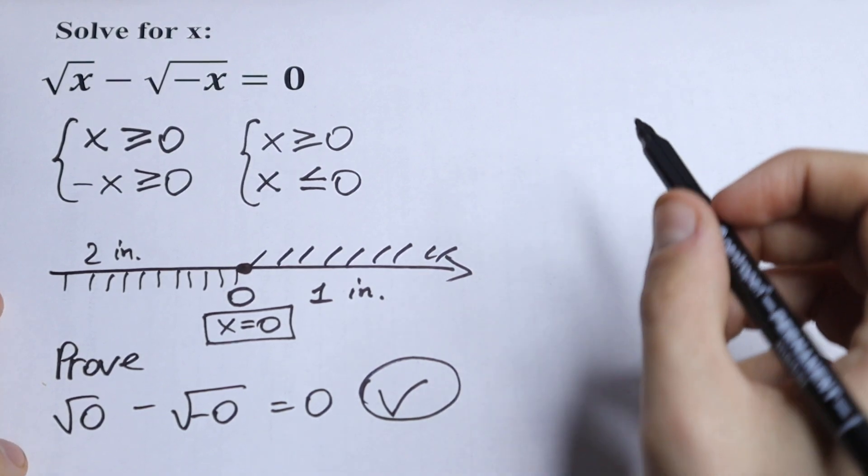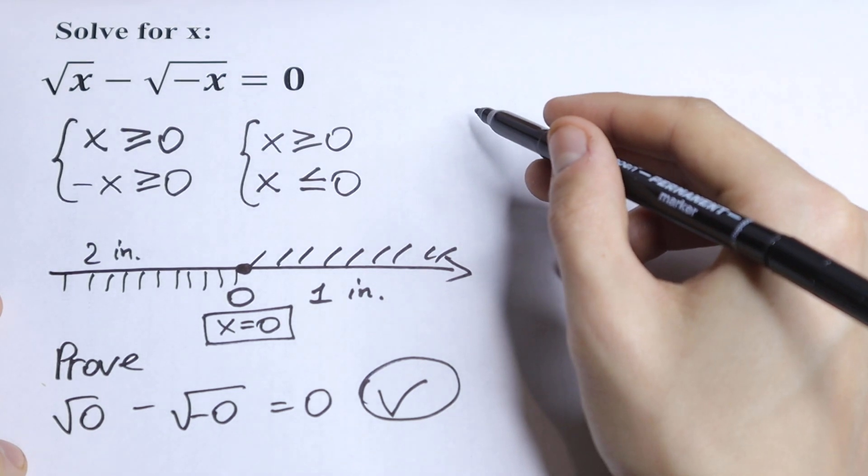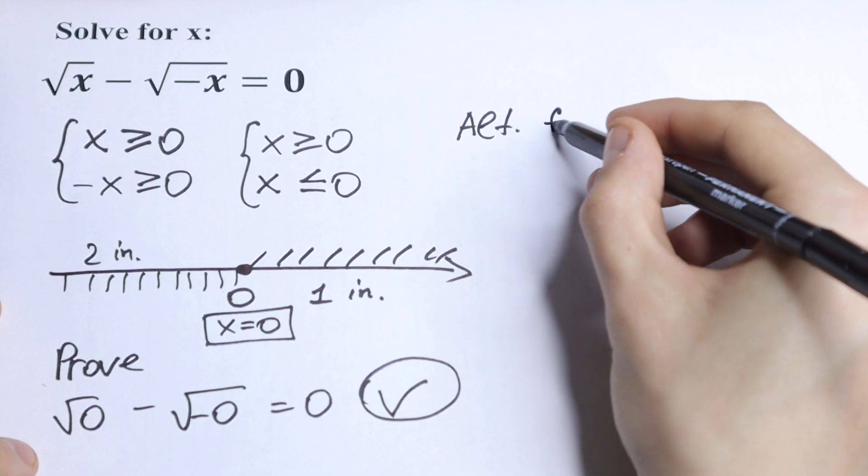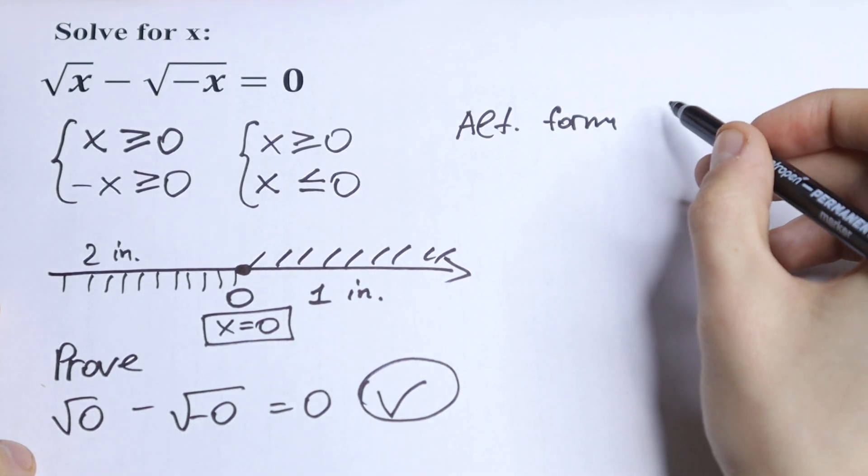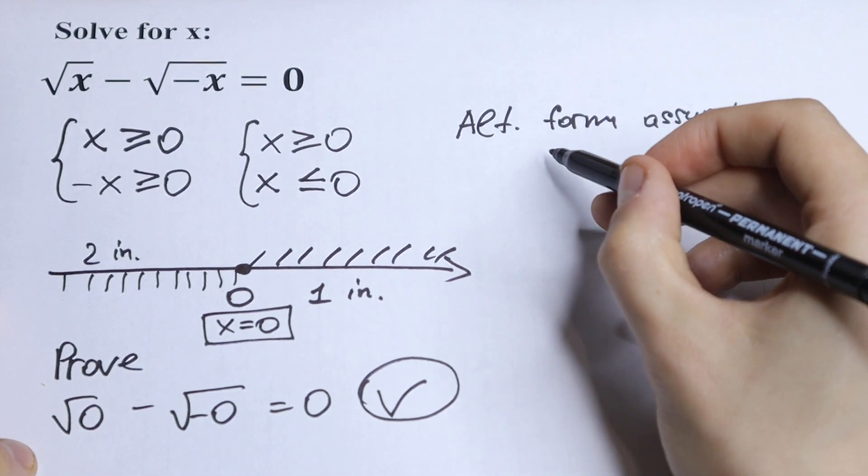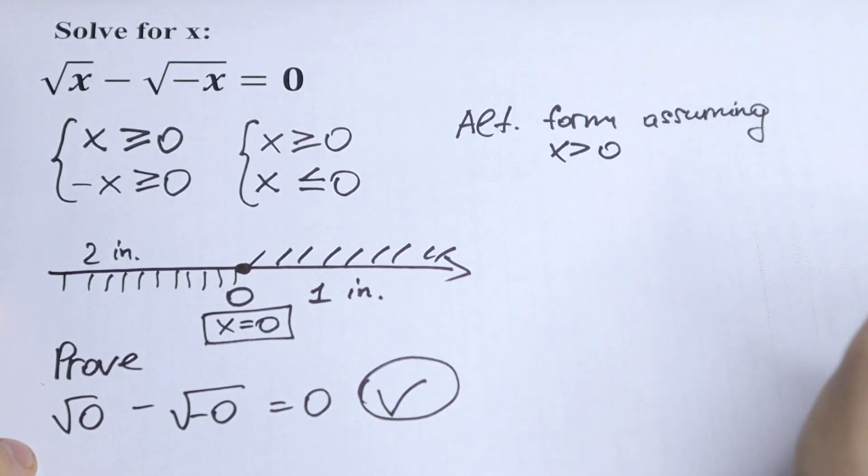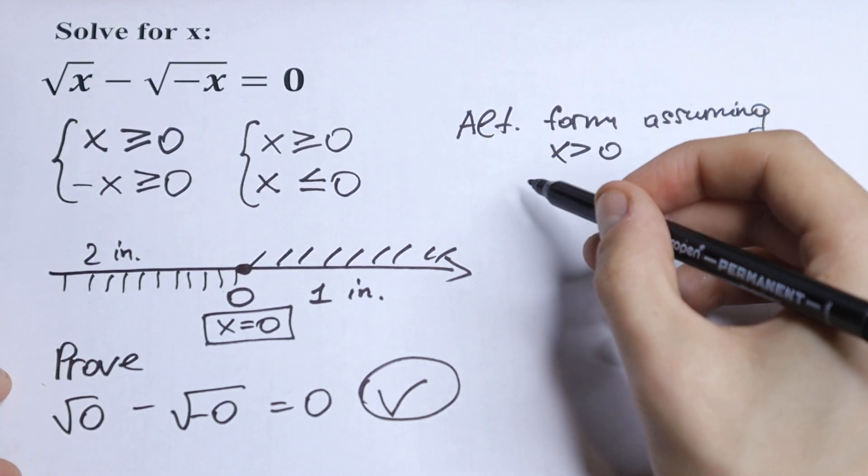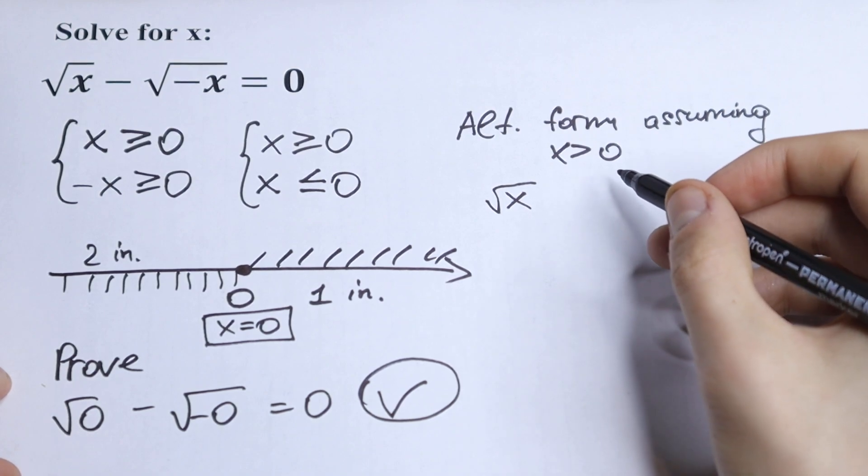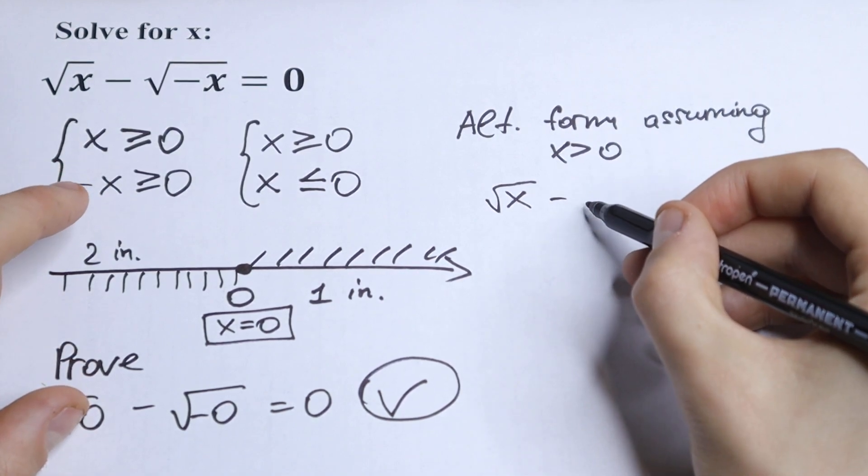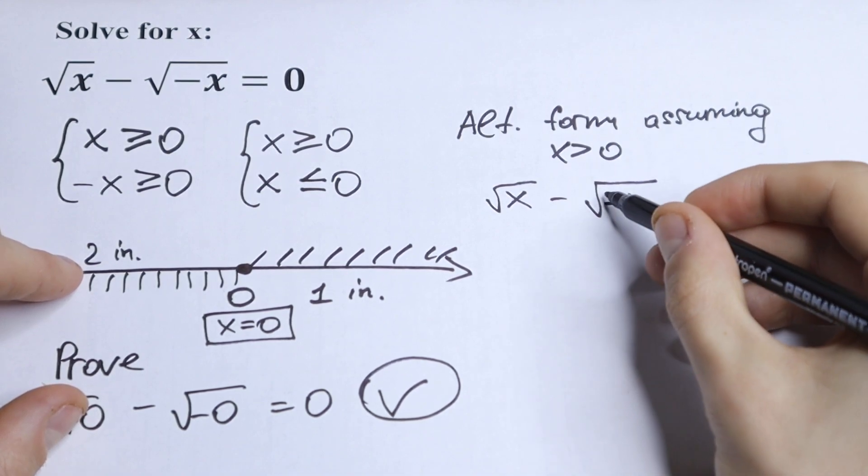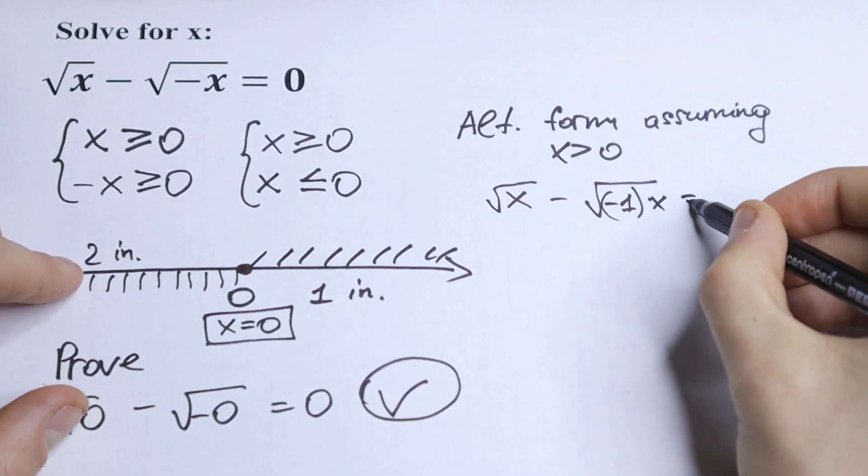And of course we can write an alternative form assuming that x is greater than 0. So if x is greater than 0 we will have an interesting case because we will have square root of x minus square root of minus x. It can be written as minus 1 times x equal to 0.